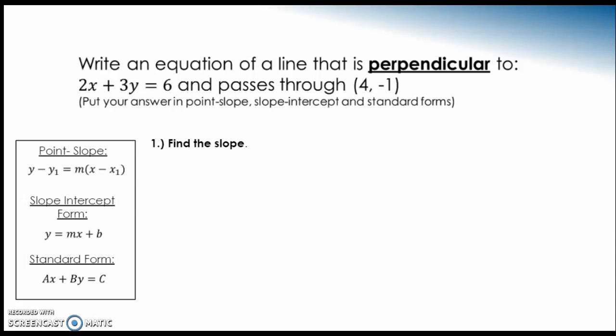All right. This is your final example that I'm going to review. So this one says, write an equation of a line that is perpendicular to 2x plus 3y equals 6 and passes through 4 negative 1. So put your answer in point slope, slope intercept, and standard form.